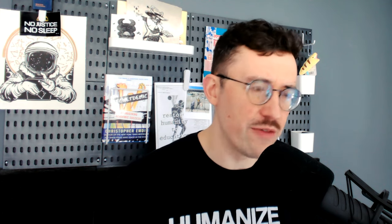Dewey's contemporary Thorndike argued for a more rote style of education where people take multiple choice tests — having everyone receive the same education because it was cleaner to organize. He argued Dewey was too theoretical and difficult to pull off at scale, so everyone should learn the same core knowledge. And obviously Thorndike won, because the main way we do education in school is through standardized processes, not through this do-reflect-apply model.